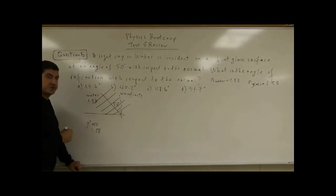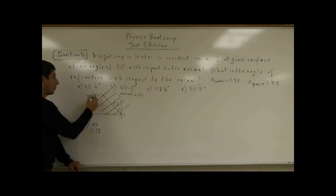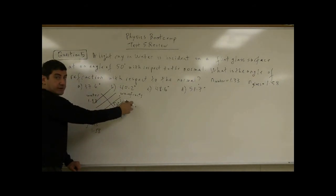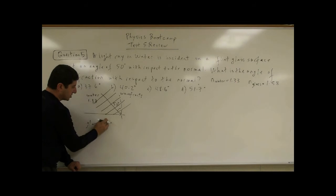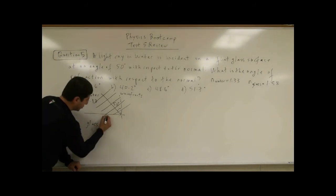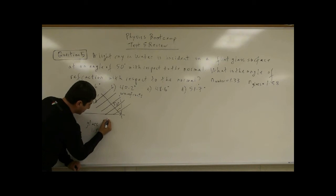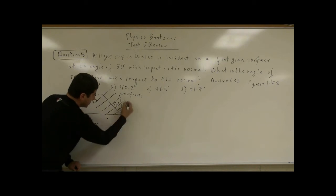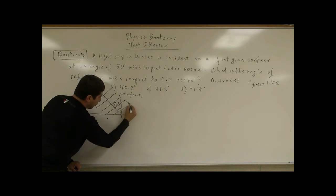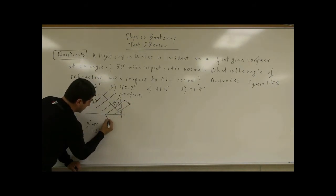Well, this part of the wave front enters the glass before that part of the wave front does. So when it enters the glass, it slows down. So in a given amount of time, this part of the wave front travels less distance than that part of the wave front. So this part goes over here. This part goes over here.